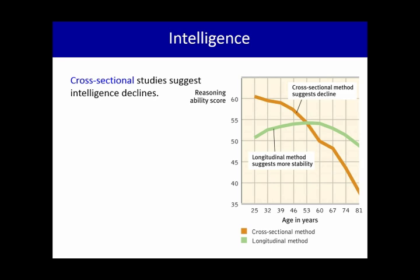We give the test all in one day, and then we compare the different age groups' performance, and we get this red line that shows that the 25 year olds did way better than the 81 year olds.